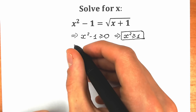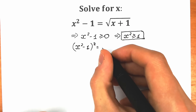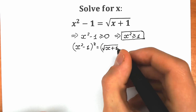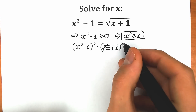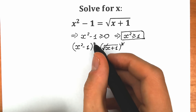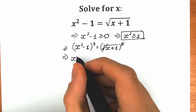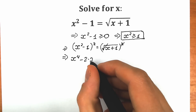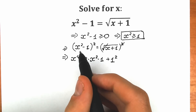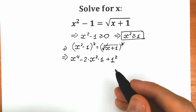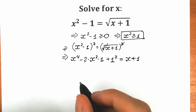Now let's square both sides. We have (x² - 1)² = (√(x + 1))². Squaring cancels the square root on the right side, leaving us with x + 1. On the left side, we raise (x² - 1) to the second power using the school identity (a - b)² = a² - 2ab + b², giving us x⁴ - 2x² + 1 = x + 1.